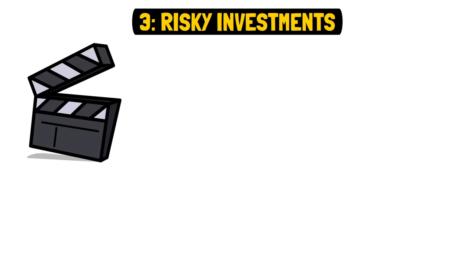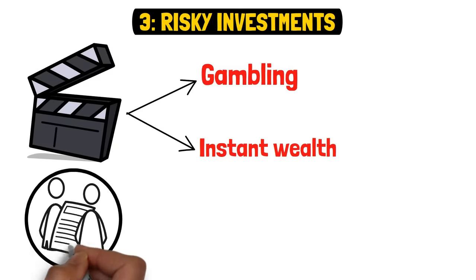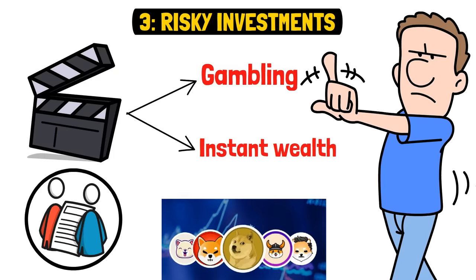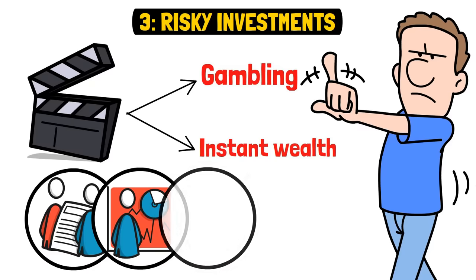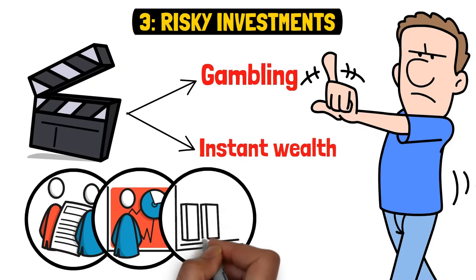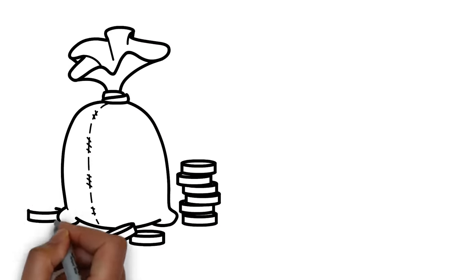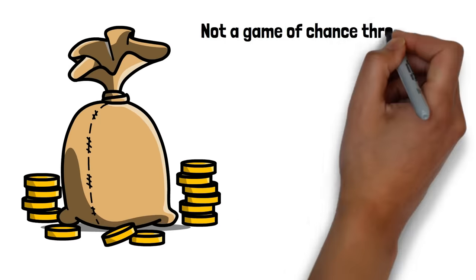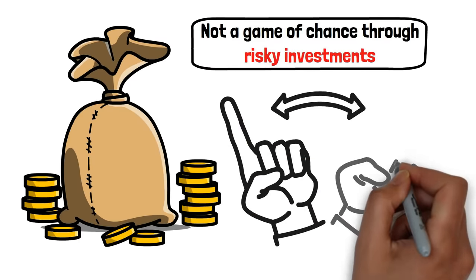Three, risky investments. While movies often dramatize investing with high-stakes gambling and instant wealth, the strategies of the affluent are typically more reserved. They shy away from the gamble of high-risk investments like pouring their life savings into crypto meme coins or jumping on speculative stock trends, favoring the consistent and calculated approach reminiscent of the tortoise rather than the hare in a classic race. Why? Sustainable wealth building is a product of disciplined gains and strategic patience, not a game of chance through risky investments. Though it lacks Hollywood's flashiness, this method is the bedrock of enduring financial growth.